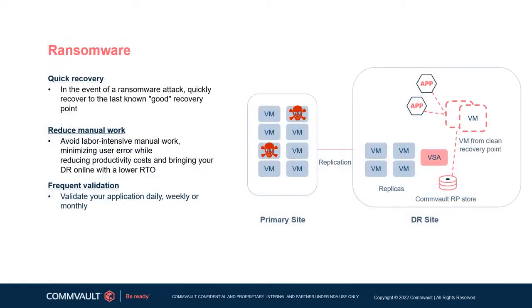DR supports ransomware monitoring, alerting, and remediating, similar to backup, taking advantage of a single-platform Commvault complete product. In the case of DR, if the source site is hit with ransomware and the first replication job copies the corrupted change to the replica site, validation fails and DR automatically reverts back to the last known good state — the recovery point — and automatically breaks the replication chain.